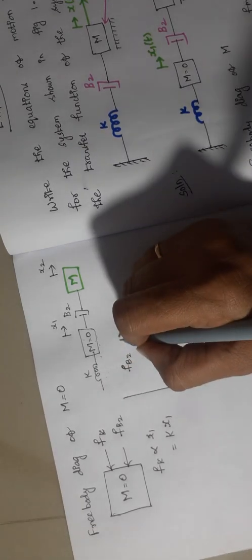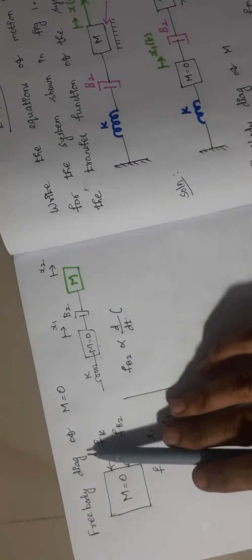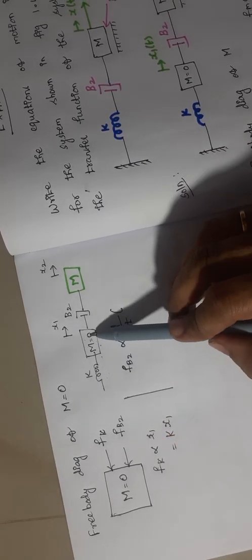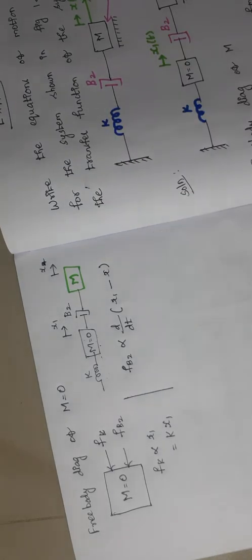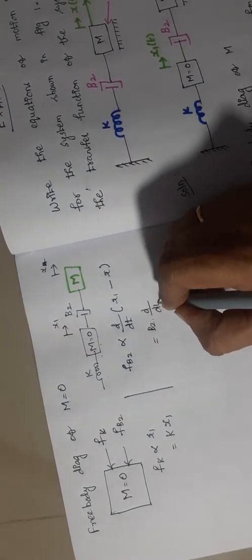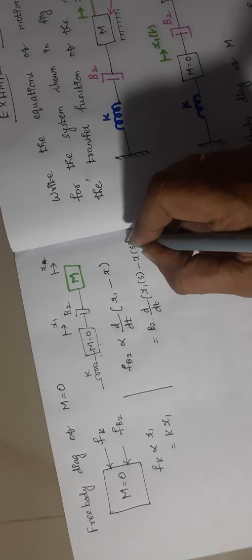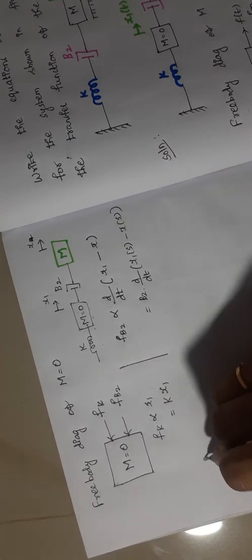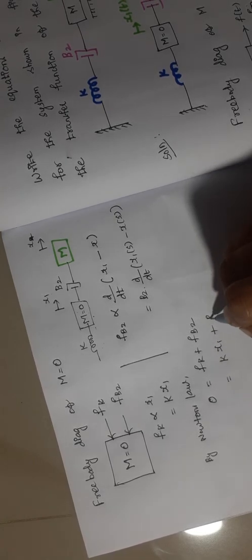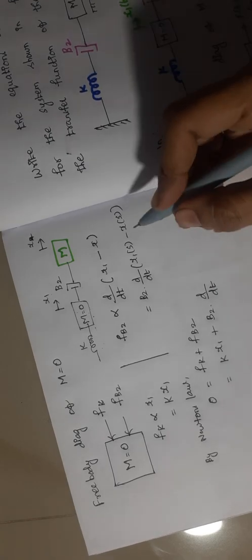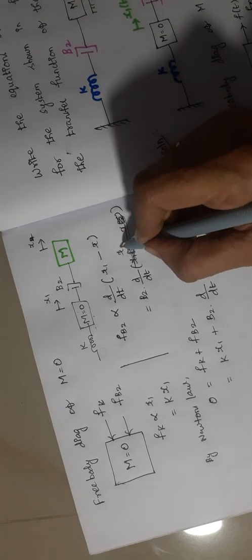The next one is Fb2. Fb2 is directly proportional to d/dt of the displacement of mass M equal to 0, which is x1. So we have to write it as d/dt of (x1 minus x), which equals B2 into d/dt of (x1 − x). By Newton's law, there is no applied force here. So it is 0 equals Fk plus Fb2, which becomes K·x1 + B2·d/dt(x1 − x).